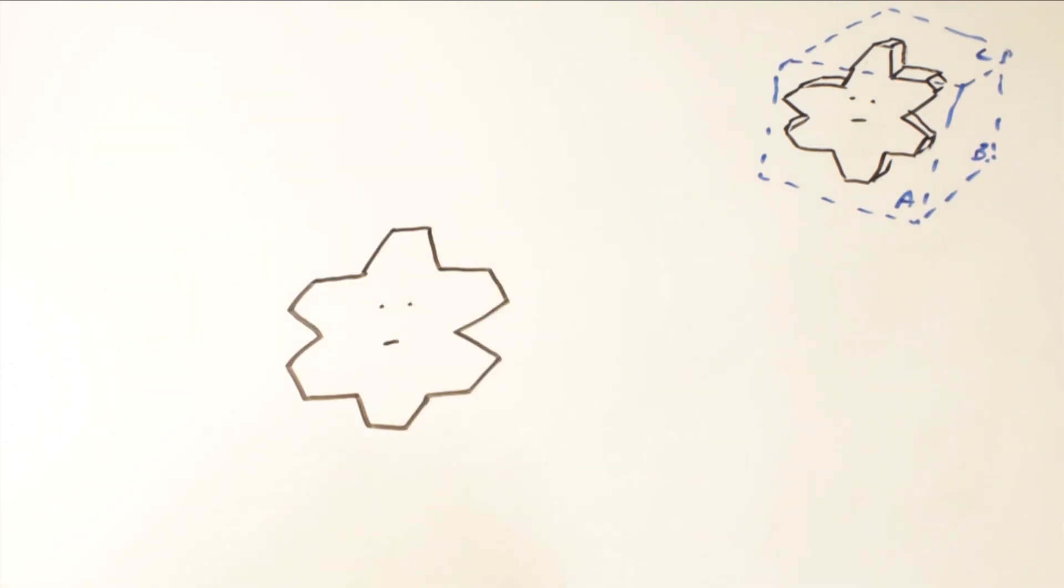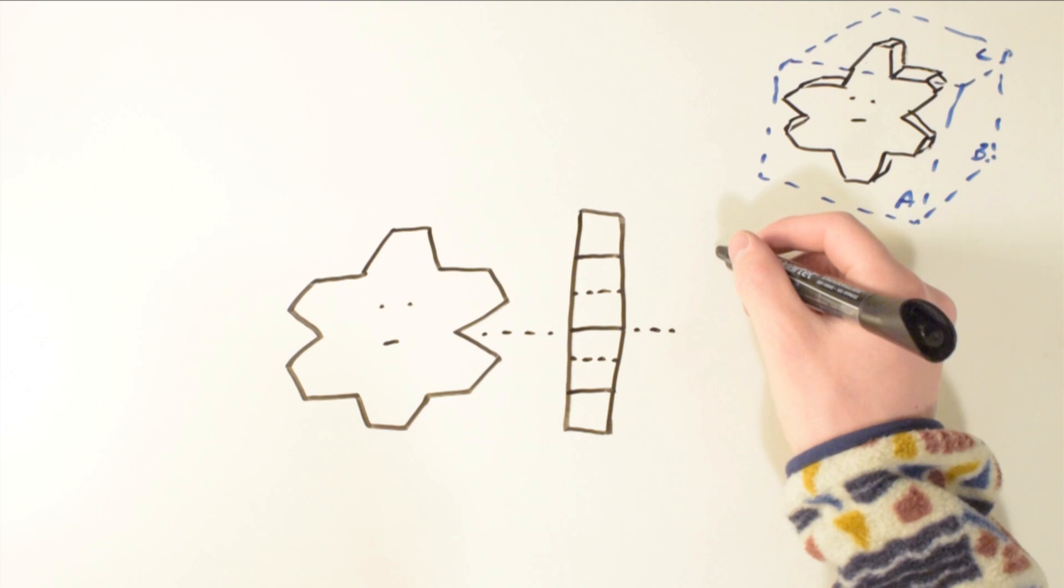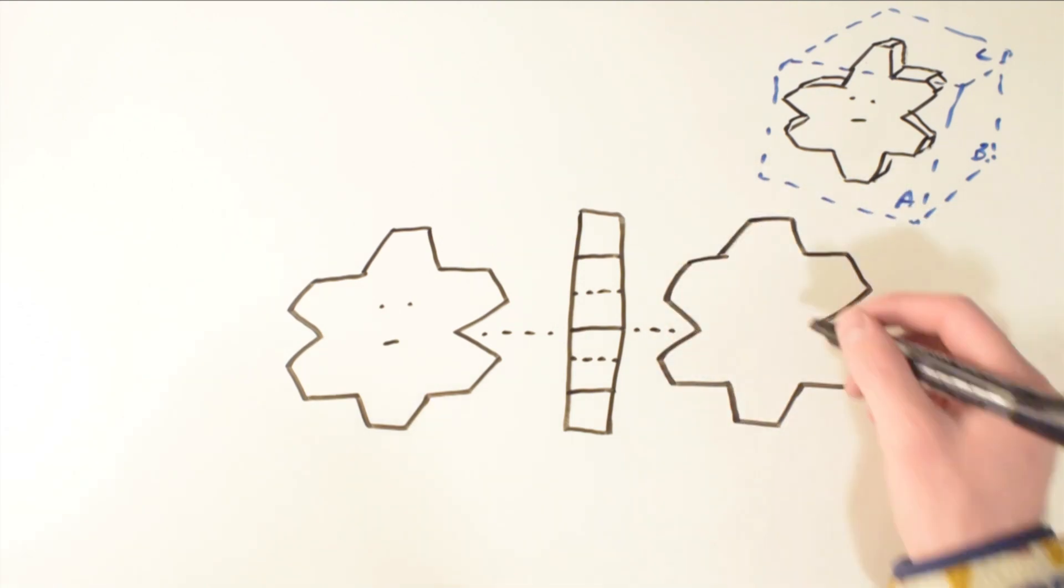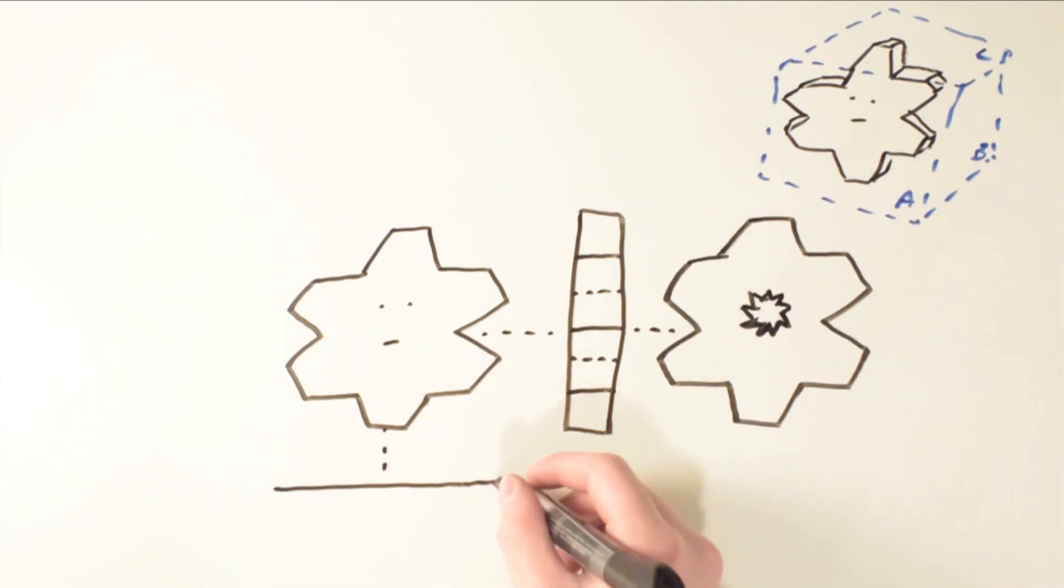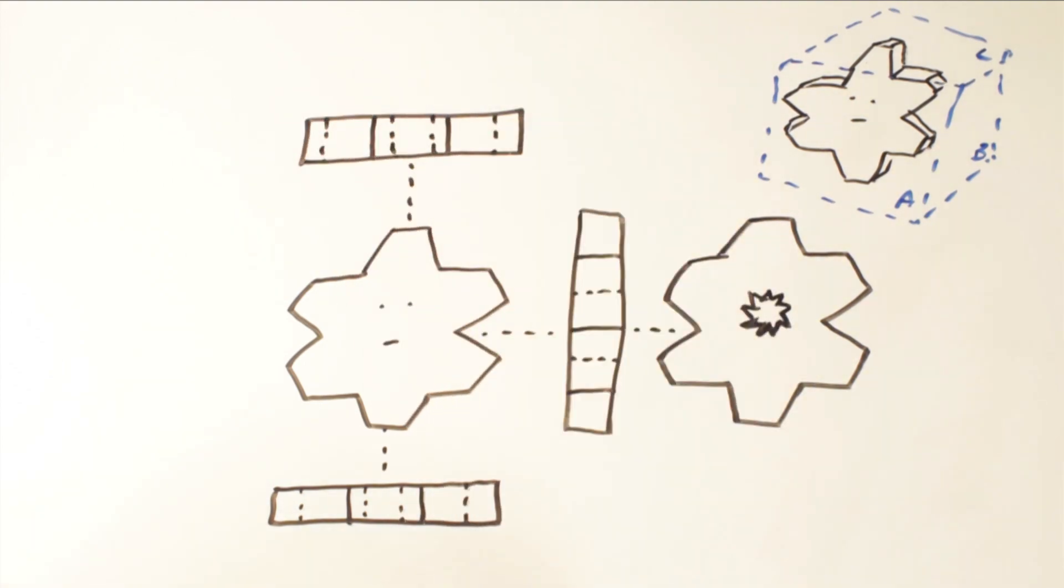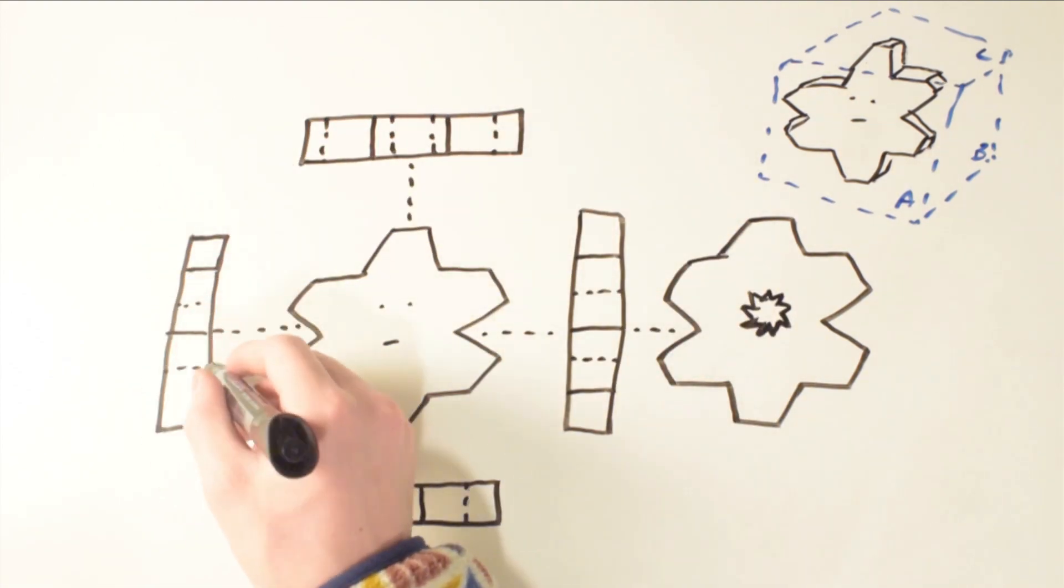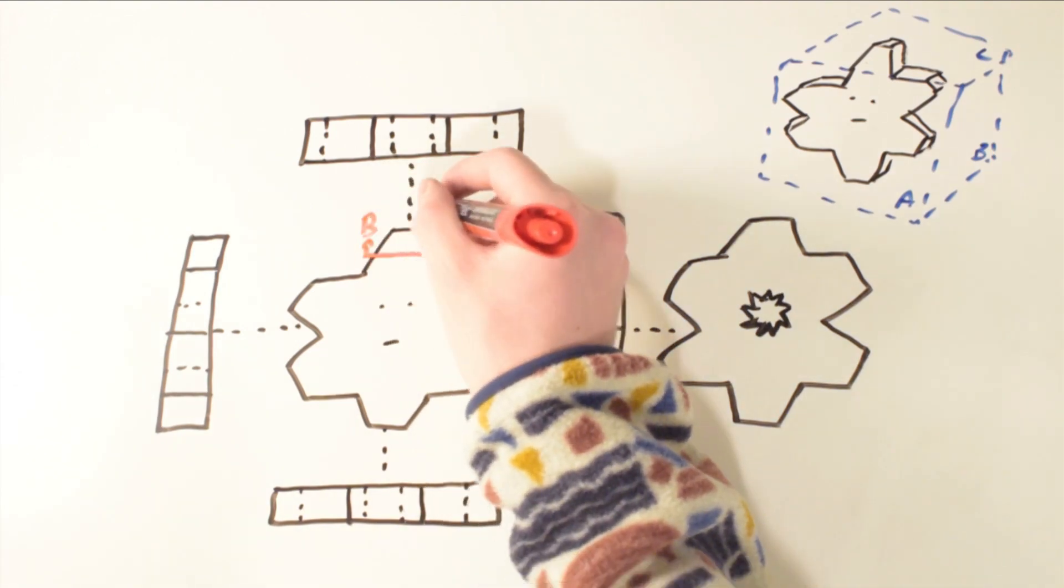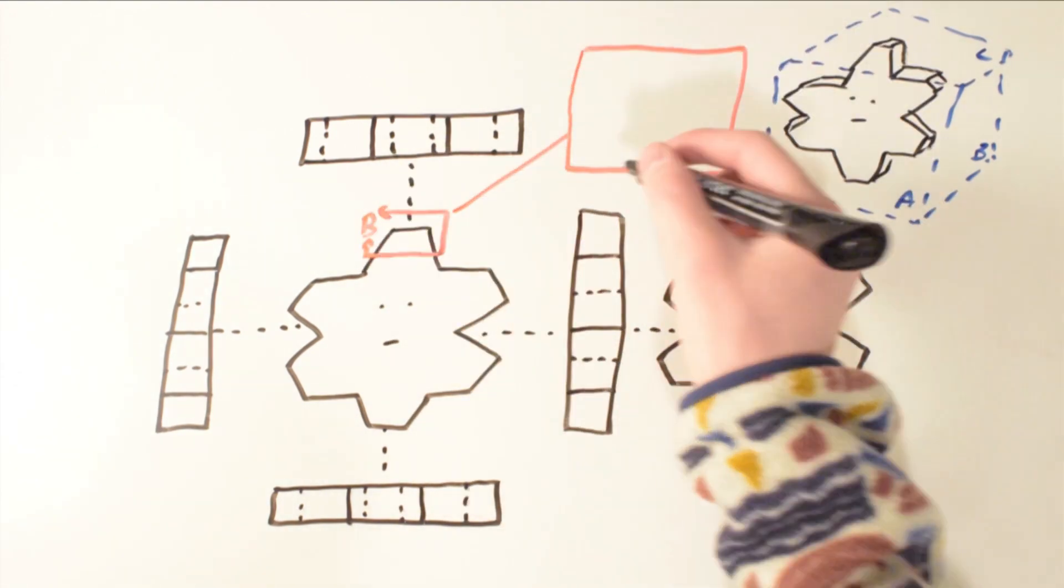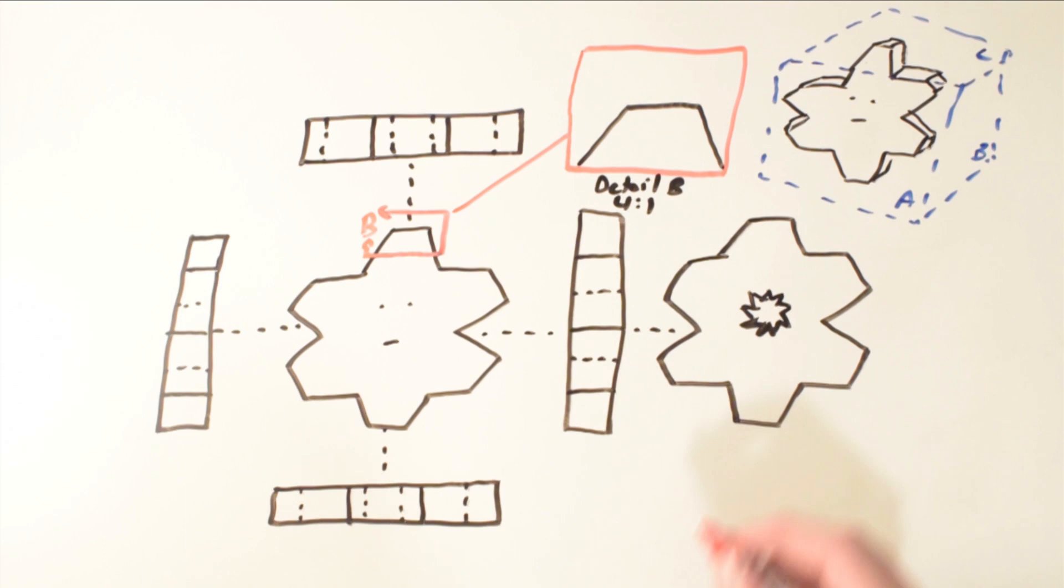This gets more complicated however when there are relatively small features that need to be shown. If this is the case, a detail view can be added. A detail view is usually indicated by a rectangle or a circle with a capital letter connected to it by a leader. The view will then be scaled up so that the important features are visible. The view needs two things below it: the view letter and the scale that it's at. The detail view may or may not be connected to the original view by a line to increase readability.